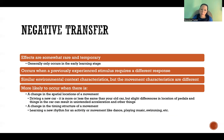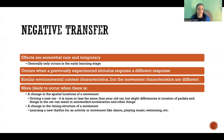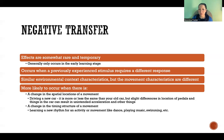Negative transfer occurs when a previously experienced stimulus requires a different response. For example, a ball coming towards you that you normally hit, but now it's a shuttlecock and you need to hit it with a different racket and different form. The stimulus and environment are similar, but you need to respond with a different motor response. Negative transfer is most likely to occur if there's a change in spatial locations for the movement or a change in the timing structure of the movement.